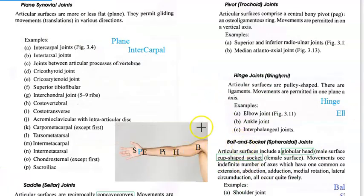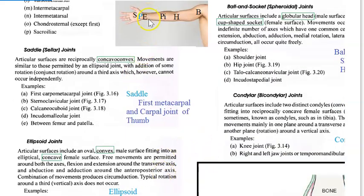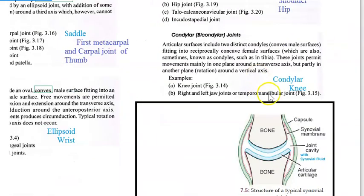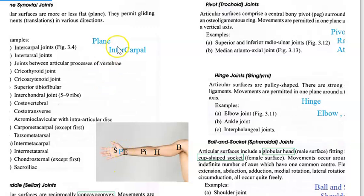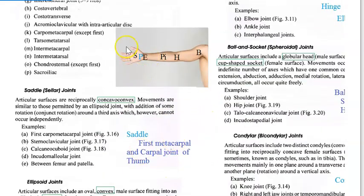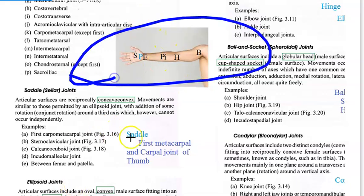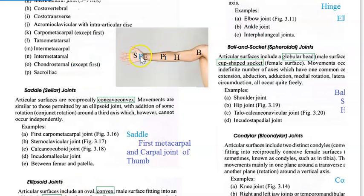Just look at this in the upper limb - there are so many types of synovial joints here. Ball and socket joint. This is a hinge joint - the elbow. Then this is a pivot joint. Then here you have E - which is ellipsoid - that's the wrist. Then what is P? P is plain - that is the intercarpal - between the carpals you have the plane joint. And S? S is saddle joint - between the first metacarpal and the carpal of the thumb. See how many types of synovial joints are there: ball and socket, hinge, pivot, ellipsoid, plane joint, and the saddle joint.